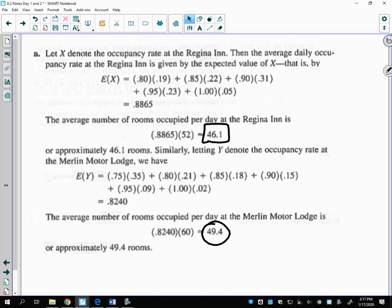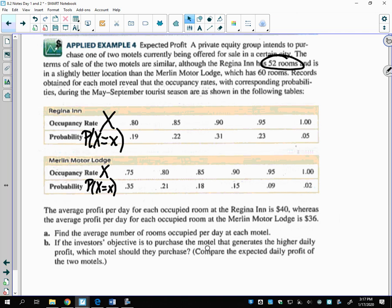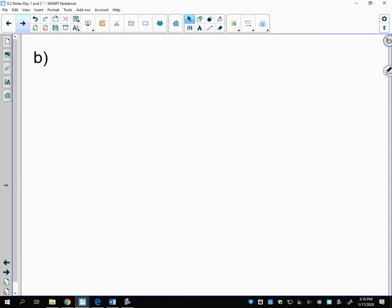Remember they gave us the profit. This was part A. Part B says if the investor's objective is to purchase the motel that generates the higher daily profit, which motel should they purchase? It says compare their expected daily profit. They told us the Regina Inn is $40 per room and the Merlin Lodge is $36 per room. For the Regina Inn, 46.1 was our average number of rooms occupied.